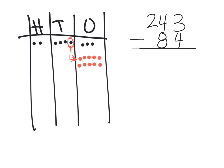So how do we model this? That ten is gone. We used to have 4 tens, now we only have 3 tens. We used to have 3 ones, but now we have 13 ones. Cross that off and make it 13. Now we can subtract: we have 13 ones, take away 4 of them. We're left with 9 ones. So I record 9 ones right here.